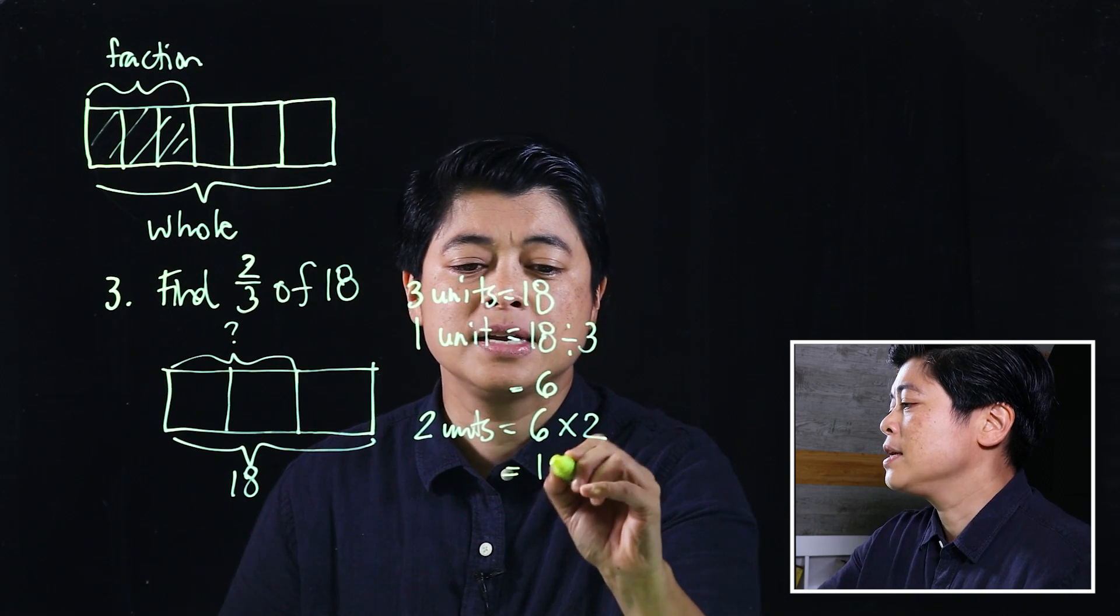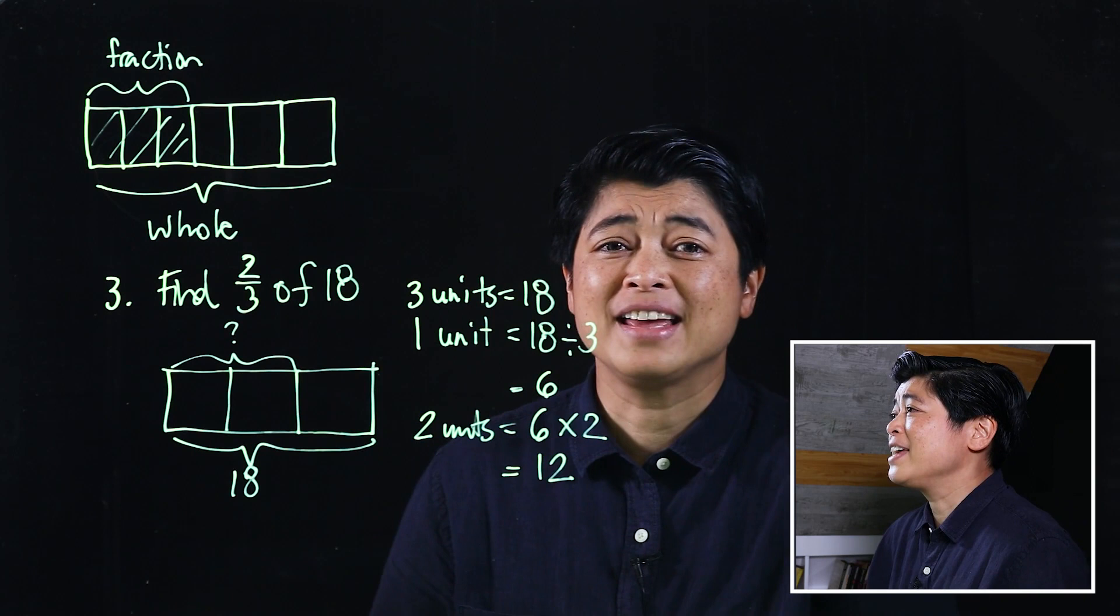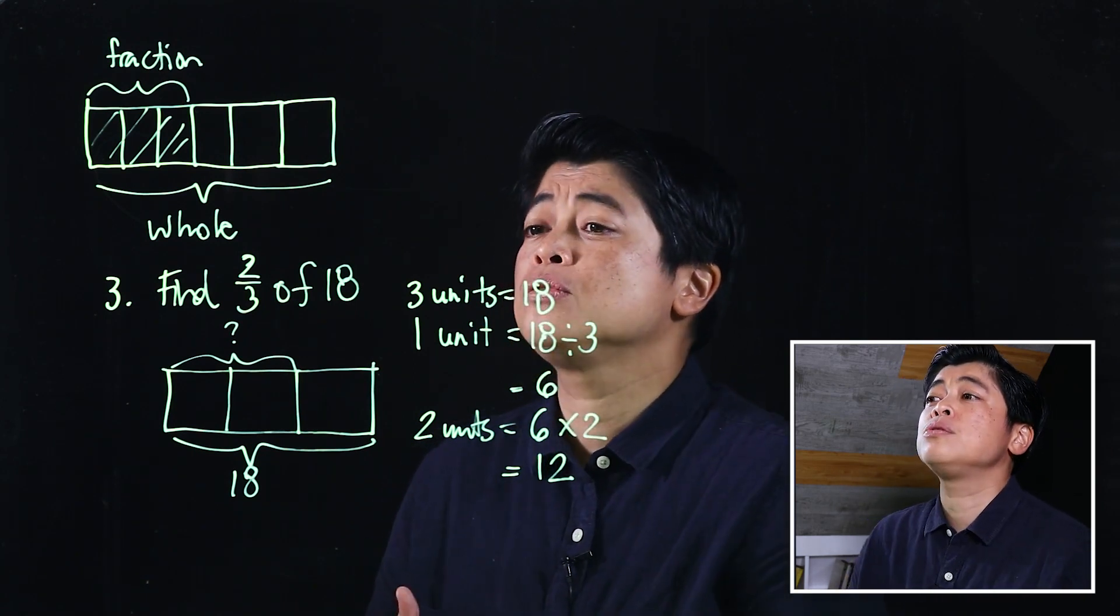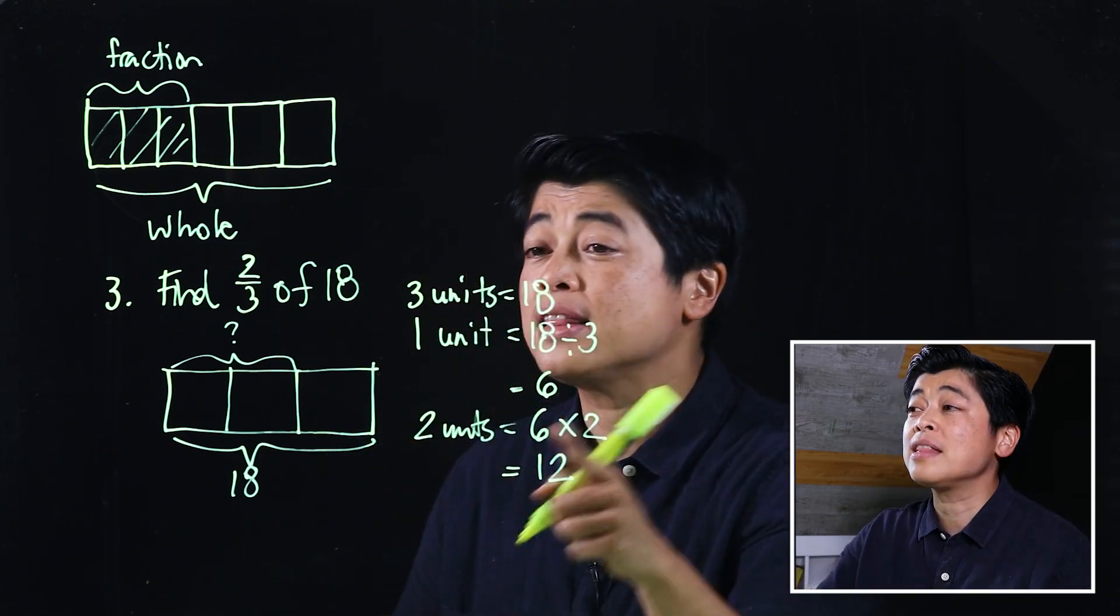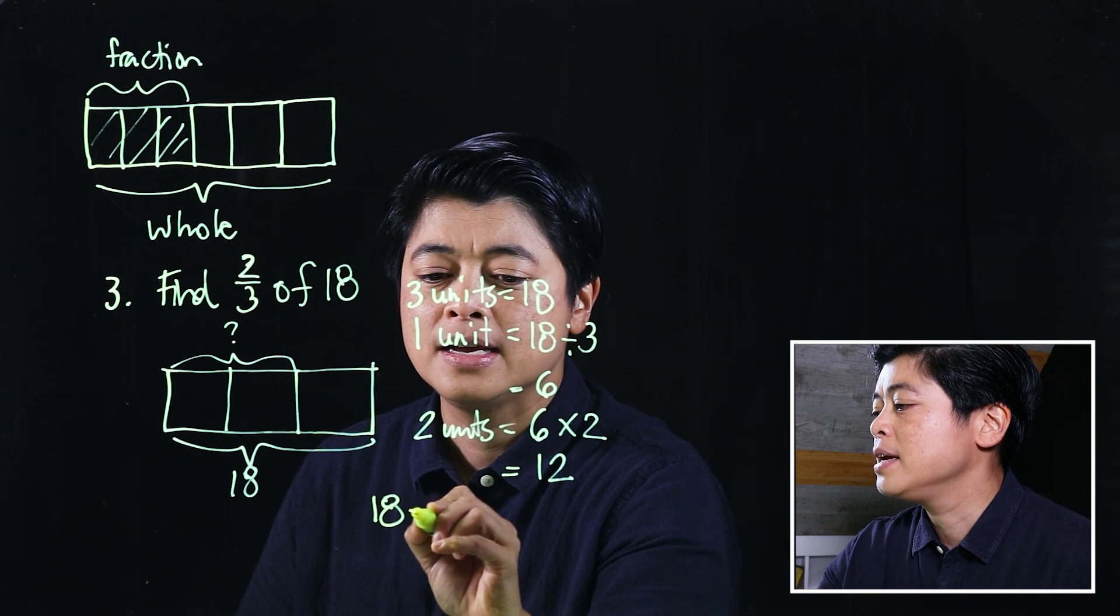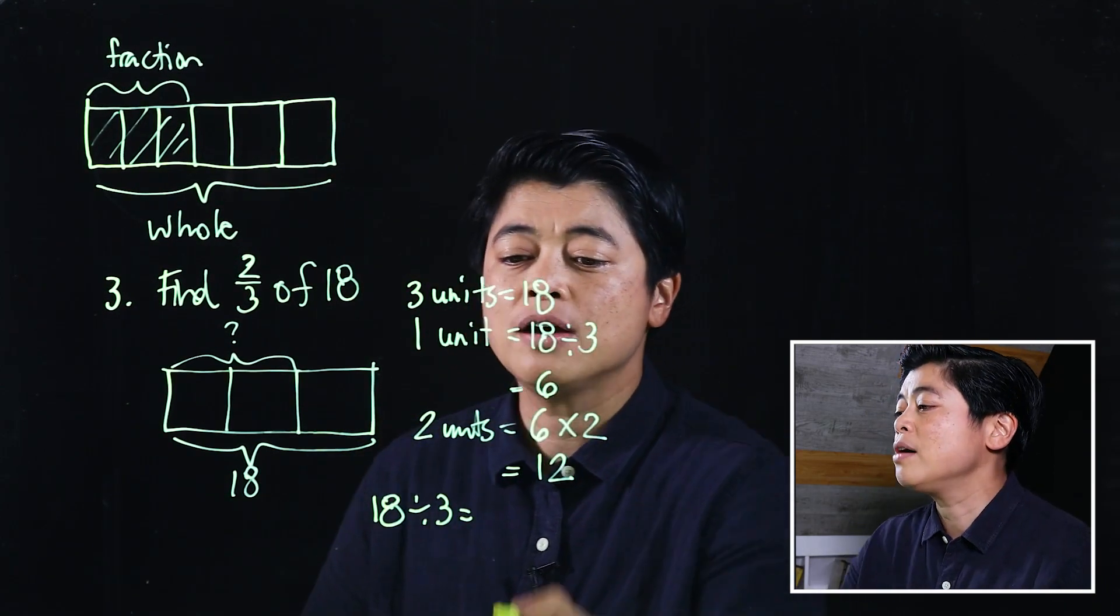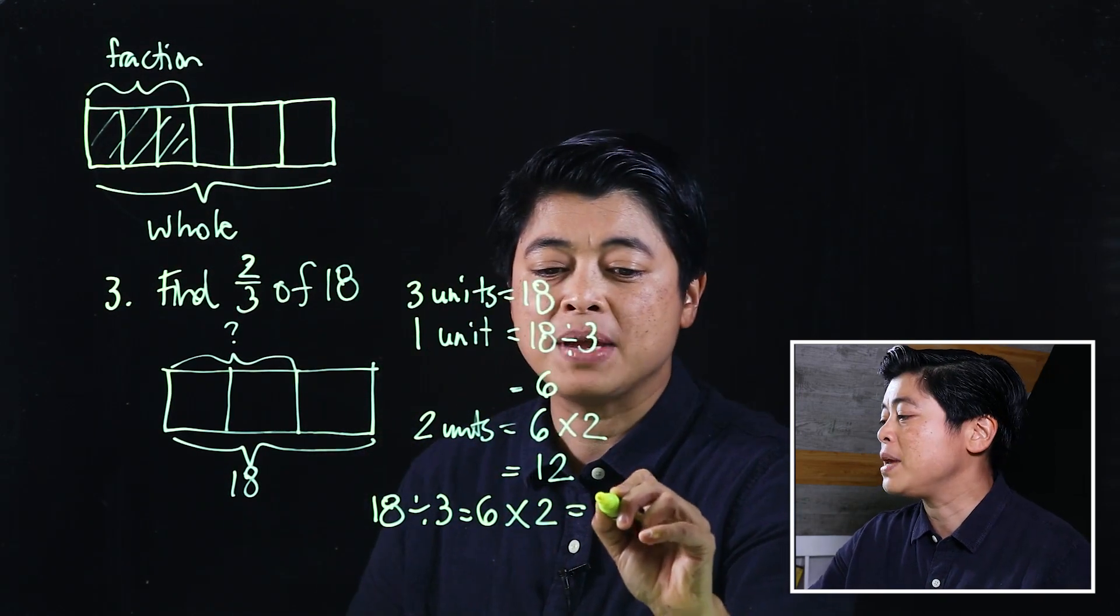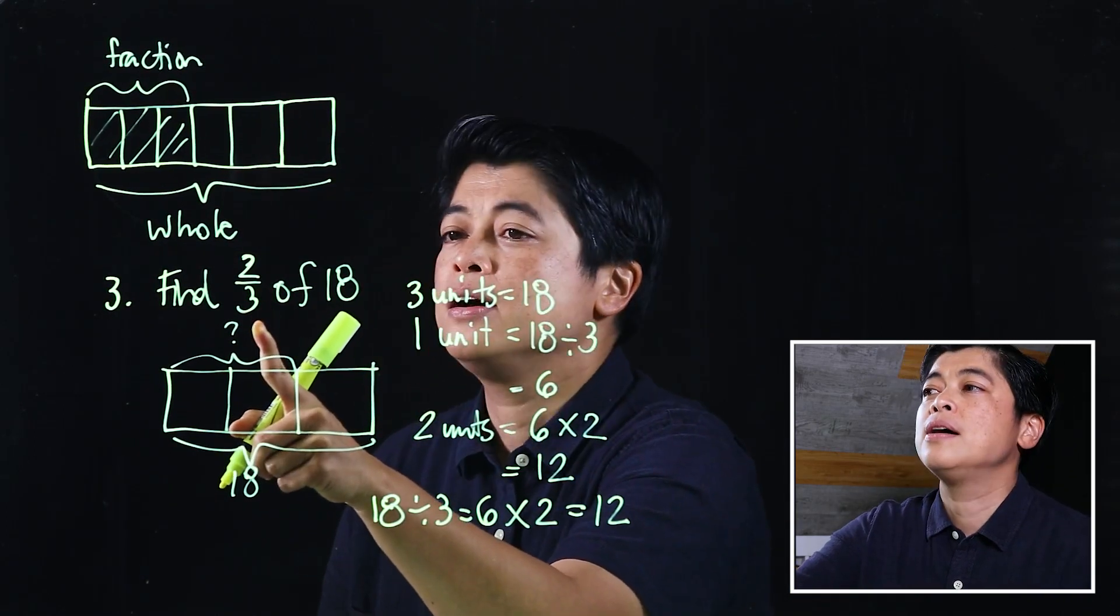This will be 12. Me personally, I find that too cumbersome. If we want to find two-thirds of 18, basically it's the same thing. Let's do what we're doing here, but it's just faster because all we have to do is take 18 and then divide that by 3, which is what they did here. That will be 6, and then multiply that by 2, and that will be 12.